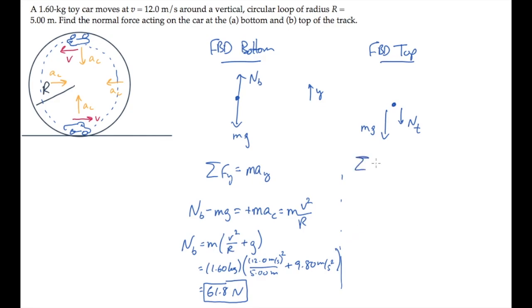Doing the same thing at the top of the track will tell us the normal force there. Summing the forces equal to ma. Summing the forces again comes from the free body diagram. There are two forces in the negative y direction: normal force at the top and the weight.